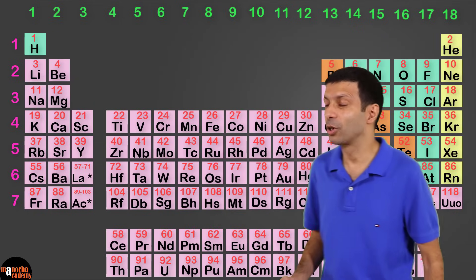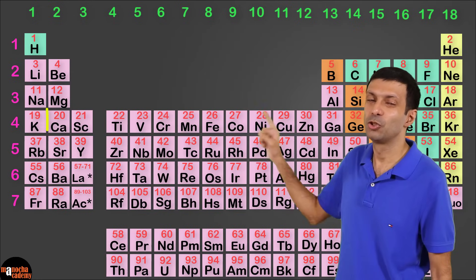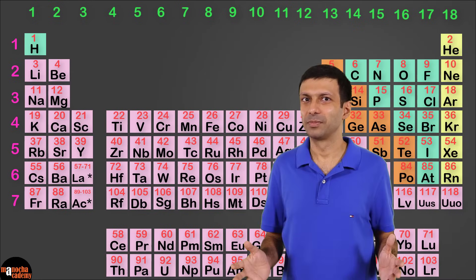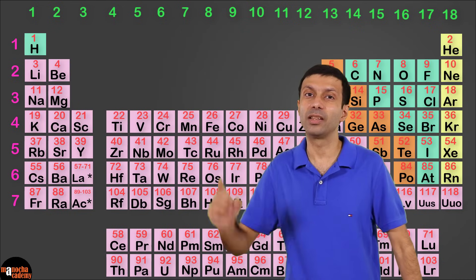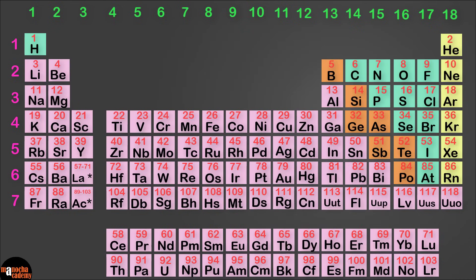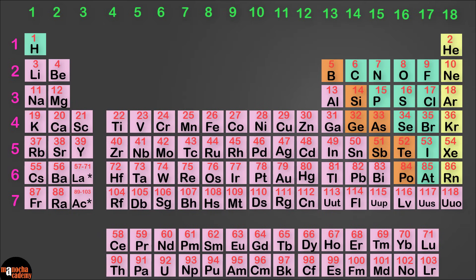Till now our focus has been from element 1 to 20, so till calcium. Now let's go ahead and take a look at the full periodic table. In the complete periodic table, we have 7 periods or 7 rows and 18 groups or 18 columns.